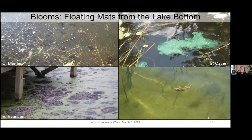There are also some cyanobacteria that can grow as colonies or mats on the bottoms of lakes. Especially in late summer, you can see these mats floating to the surface. This tends to happen in lakes with really clear water because the mats start out growing on the bottom and need clear water so sunlight reaches them for photosynthesis. These are seen frequently in late summer in northern Wisconsin lakes that are really clear.